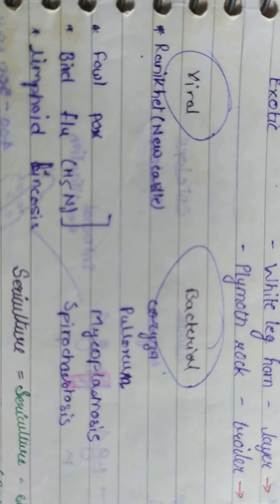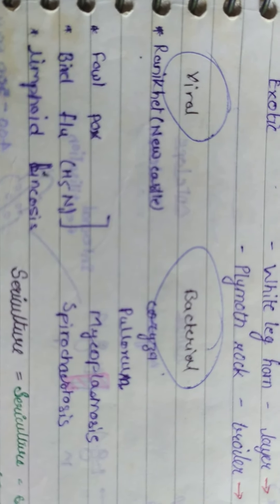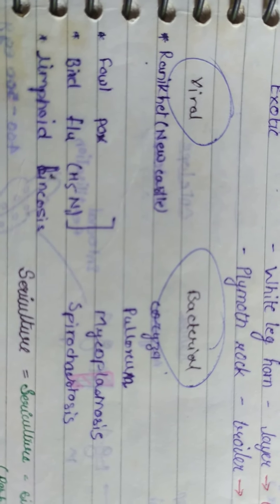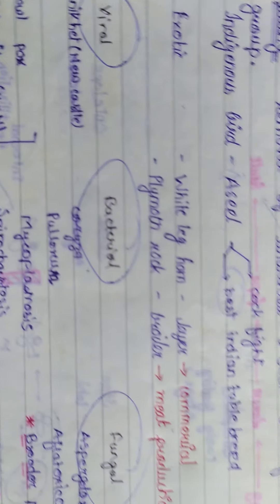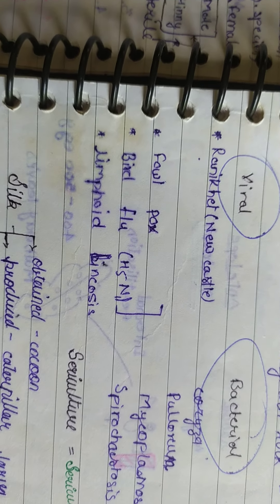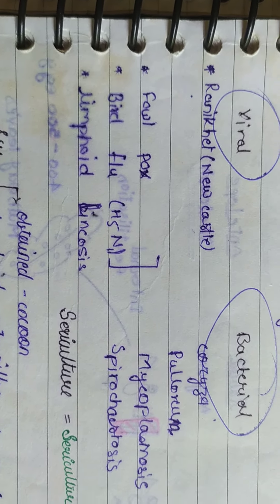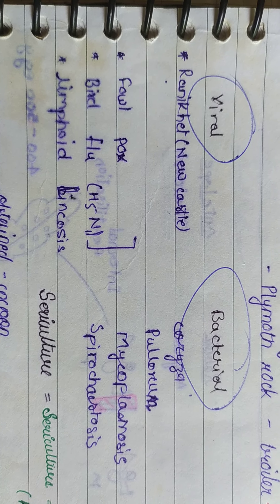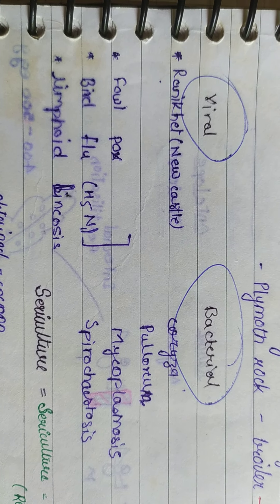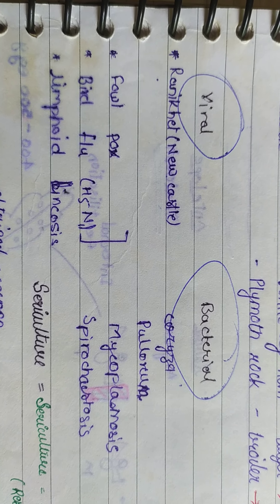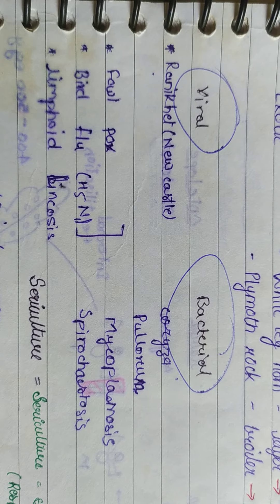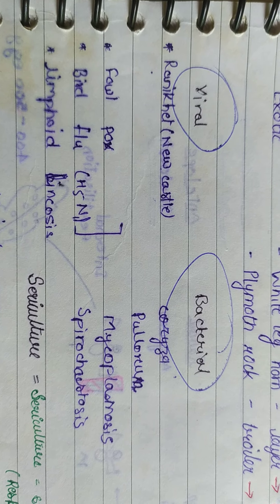Additional viral diseases include Fowl Pox, Bird Flu (H5N1), and Lymphoid Leucosis. Ranikhet is well known as Newcastle disease. Fowl Pox, Bird Flu H5N1, and Lymphoid Leucosis are the main viral diseases of poultry.